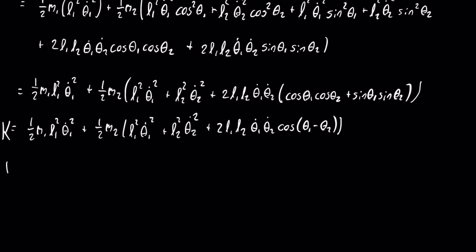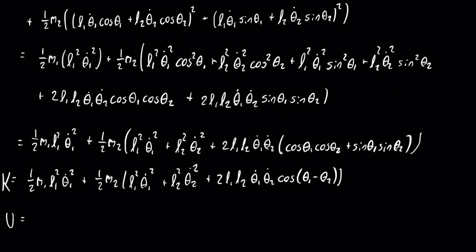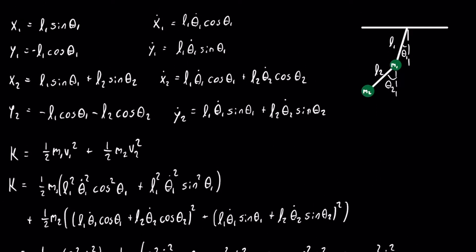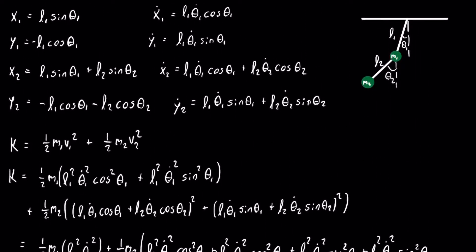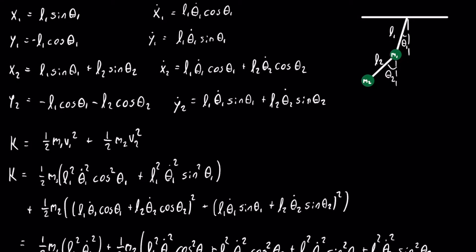Now, we can start with the potential energy. Luckily, this is a lot simpler than the kinetic energy. Let's scroll up and look at what we have already. Gravitational potential energy is just MGH, but what is the H in this case? It's just going to be Y1 and Y2. So we can just plug in M1, G, and then Y1, and then add that with M2, G, Y2.